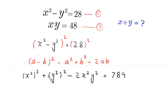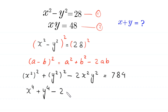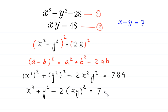Now x squared whole squared becomes x to the power 4, and y squared whole squared becomes y to the power 4, minus 2 times x squared y squared — which can be written as (x times y) whole squared — is equal to 784.